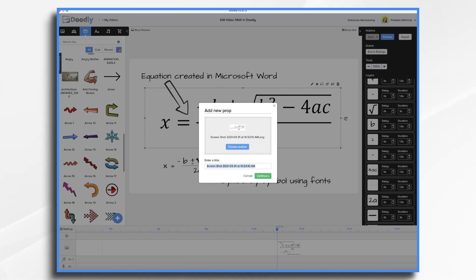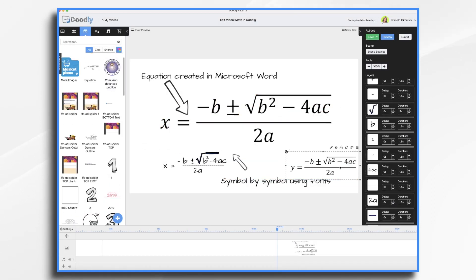And now I simply, I can change the name. And now here's my new equation. Because it's newly imported, Doodly will scribble it on by default.